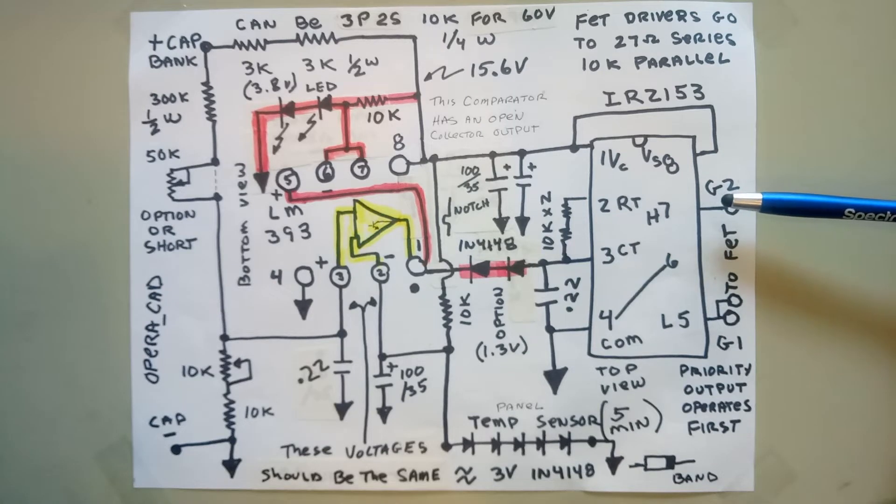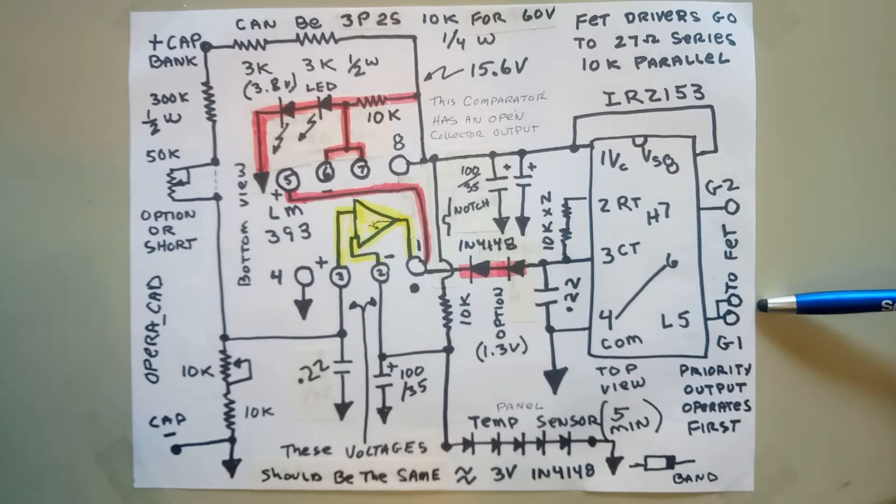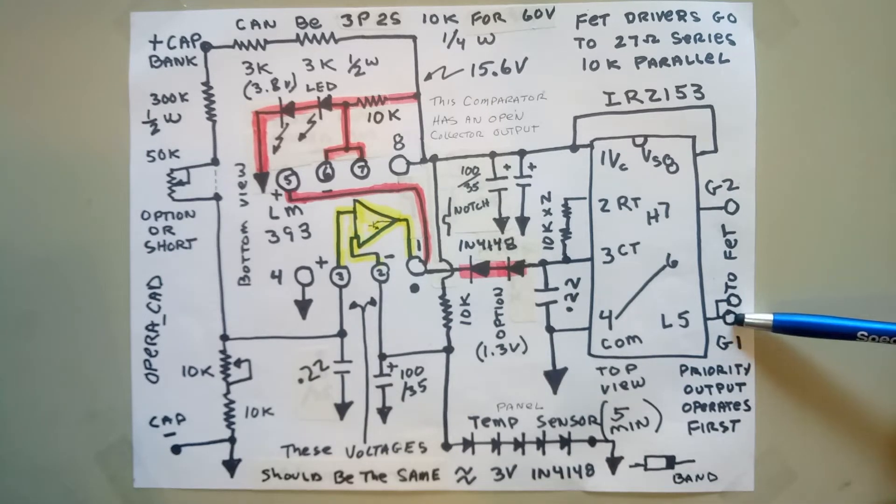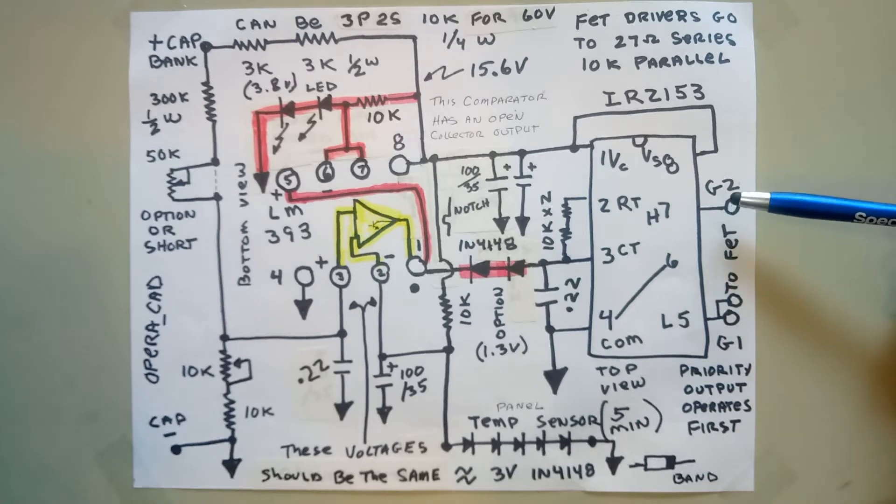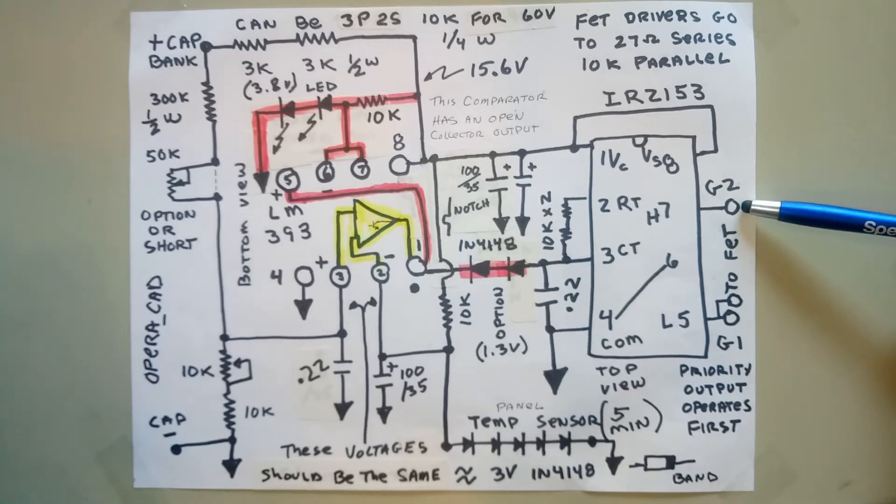We have two outputs. This is normally a push-pull output, so one FET turns on or the other FET turns on, never at the same time. You always have a minimum off time. That allows you to put a thermostat—a standard mechanical AC thermostat—in series with the heating element. This lower output here, this L5, this is the priority. Like I have 500 watts of panels, the first 200 watts will go just to this heater in my system down there.